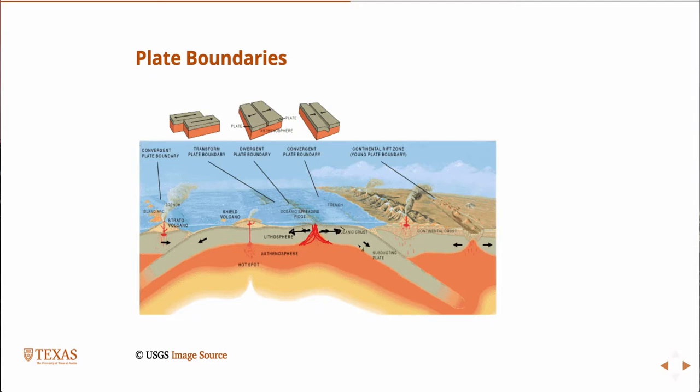At the same time, that forces the existing plates to the side, away from the volcanic activity. Therefore, we call this divergent. Divergence means things move away. So the divergent plate boundary, things are moving away from where new mass is being generated.